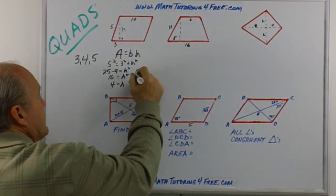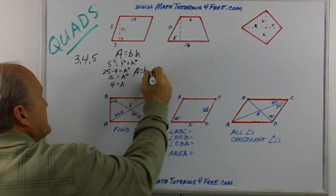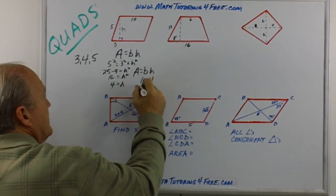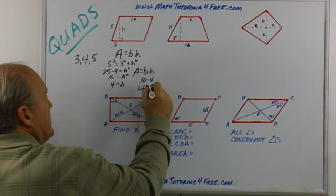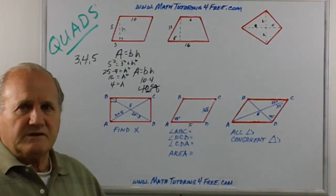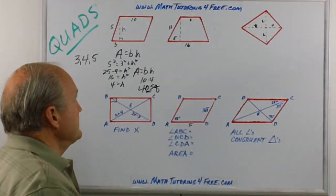But now that we have the height is 4, the area we know is base times the height. So that's 10 times 4. So the answer would be 40 square units. That's whatever those happen to be: inches, centimeters, meters, etc.